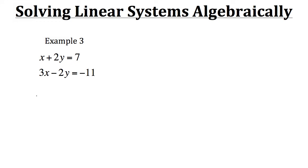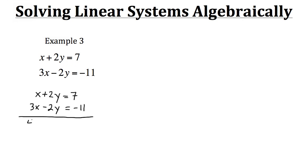So we have x plus 2y equals 7, and then 3x minus 2y equals negative 11. When we add these together, we add all the like terms. On the left side, x plus 3x gives us 4x. Also on the left side, 2y minus 2y cancels and leaves us with 0. On the right side, 7 plus negative 11 is like doing 7 minus 11, which gives us negative 4. So now we're left with 4x equals negative 4. To isolate x, we divide by 4, getting x equals negative 4 divided by 4, which simplifies to negative 1.